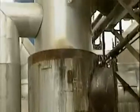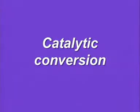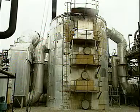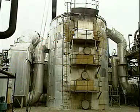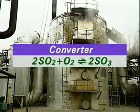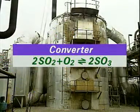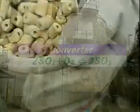The oxidation produces large amounts of heat. That heat is used to boil water to produce steam to generate electricity. The gas mixture which leaves the furnace contains sulphur dioxide and enough oxygen for the next stage. In the converter, sulphur dioxide reacts with oxygen to produce sulphur trioxide. The reaction requires a catalyst, mainly of vanadium oxide.